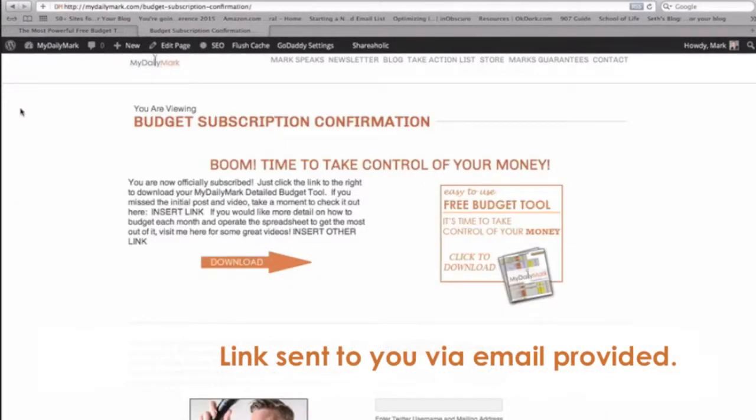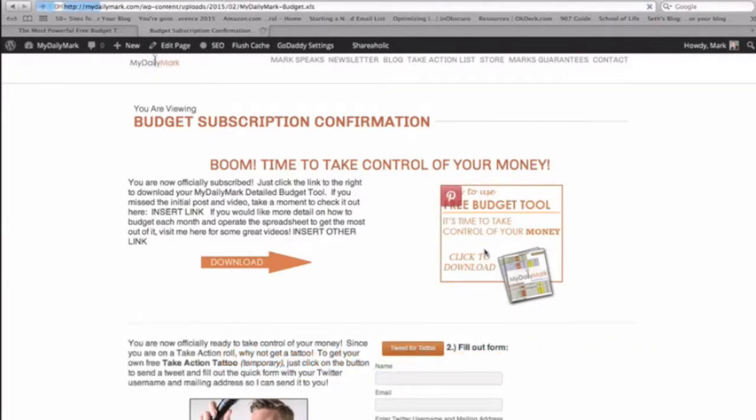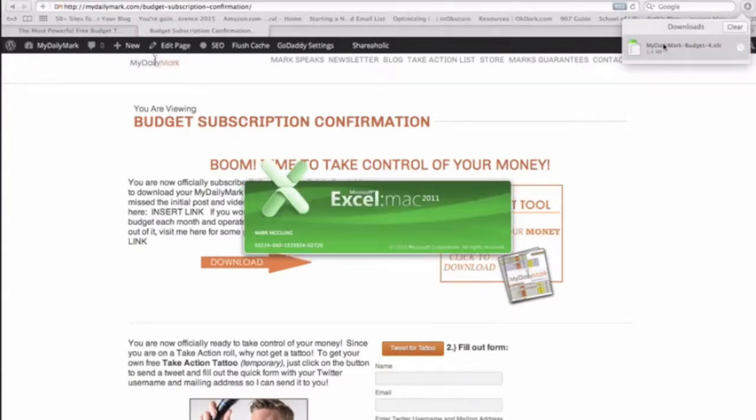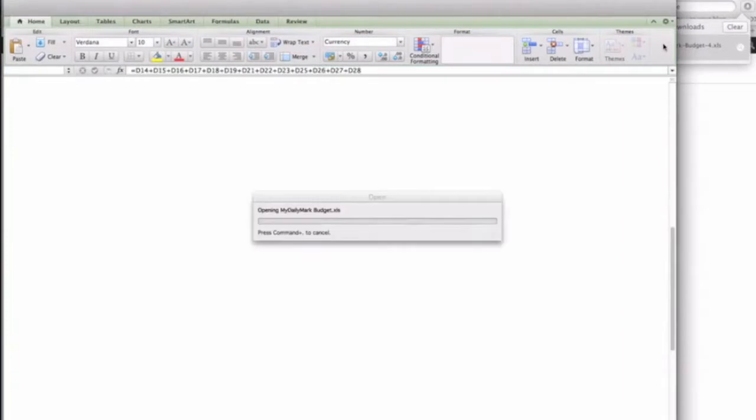Once you submit, you'll be sent a link to the downloadable budget. Then all you have to do is click on the budget, see it downloaded up here, open it up, and there's the budget.